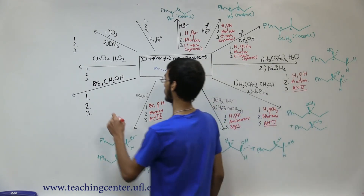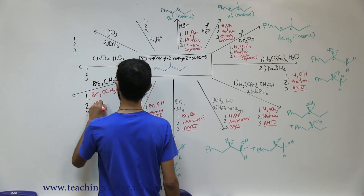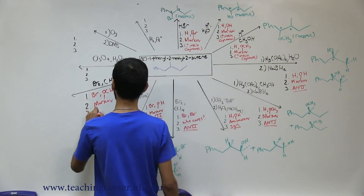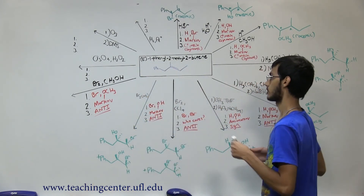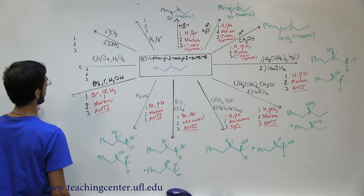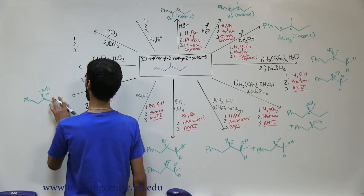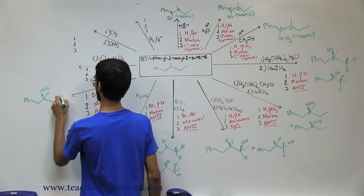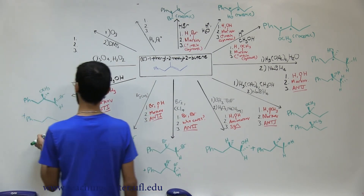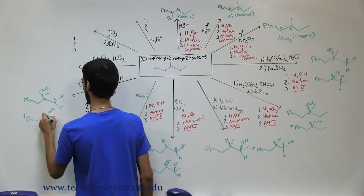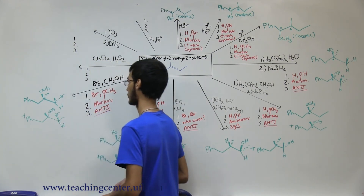The next reaction is Br2 with alcohol, which gives haloether formation. We add Br and OCH3; the OCH3 is Markovnikov; and it's anti addition. Again we get two products. First product: OCH3 adds up to the Markovnikov position, pushing the methyl back, and since OCH3 is up the Br adds down. Second product: OCH3 adds down, pushing the methyl up, and the Br adds up, pushing the methyl back. Those are your two products from haloether formation.